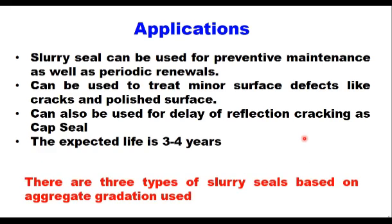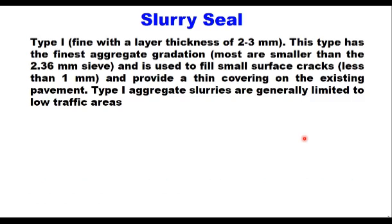There are three types of slurry seals based on aggregate gradation used. Type 1 is a fine layer with thickness of 2–3 mm and has the finest aggregate gradation. Most aggregates are smaller than 2.36 mm sieve and it is used to fill small surface cracks less than 1 mm and to provide a thin covering on the existing pavement. Type 1 aggregate slurries are generally limited to very low traffic areas.